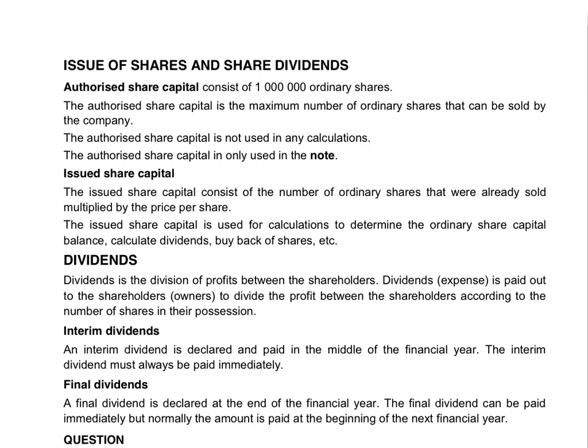Remember that your authorized share capital consists of a million ordinary shares — that is the maximum number of shares that you can sell. You never use it for calculations, you only use it in the note. Issued share capital consists of the number of ordinary shares that were already sold, and the issued share capital is used in calculations.